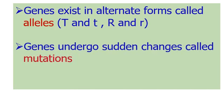Genes can undergo sudden changes called mutations. Alleles such as dominant and recessive forms arise through mutation. For example, capital T can undergo mutation to become small t, and capital R can produce small r through mutations.